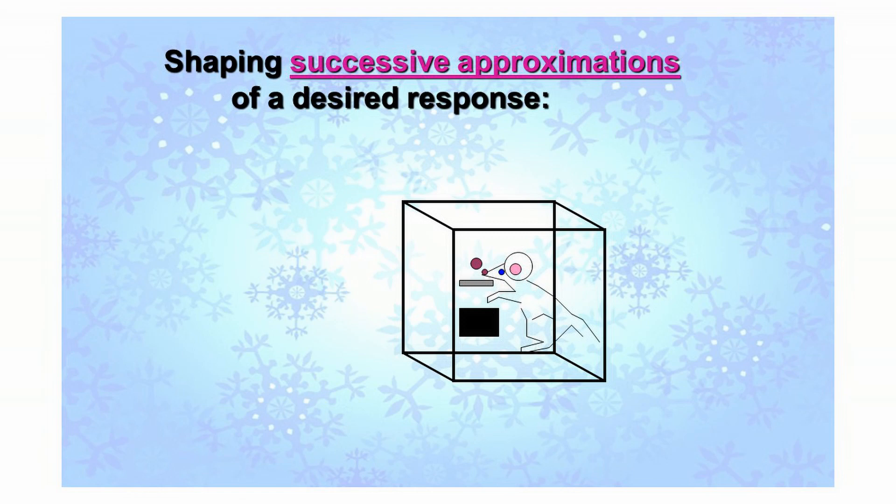I could specifically train the rat to press the lever with both paws, one paw, left paw, right paw, or its little rat elbow. But I think I would just reinforce any kind of lever press with any topography of behavior. Shaping successive approximations of desired responding is very helpful in many types of settings.